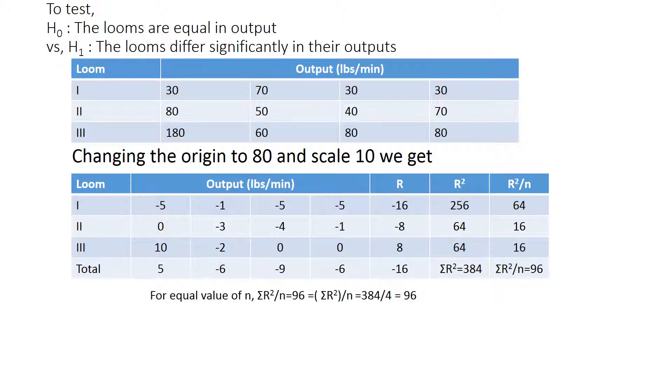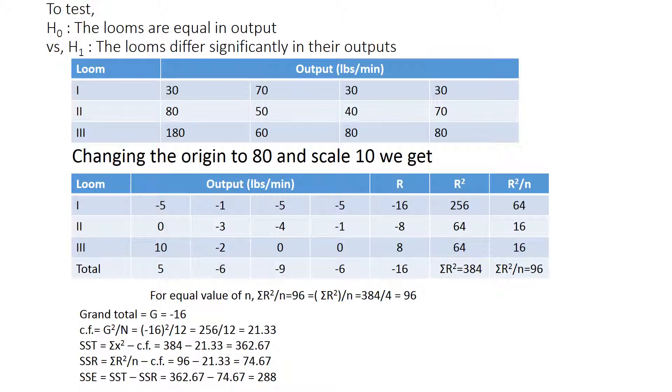Now we have got our calculation. We have to calculate SST, SSR, and SSE. Now we have to calculate CF. First, the grand total is given as negative 16. So using the grand total value G, we calculate CF. CF is given by G squared by N. N is the total number of samples, which is 4 columns times 3 rows equals 12. Or we can just simply count the samples. So CF is negative 16 squared by 12, which is 256 by 12, which equals 21.33.